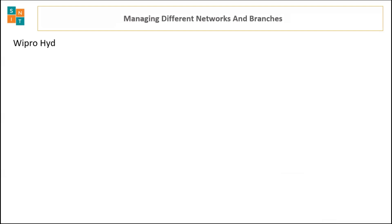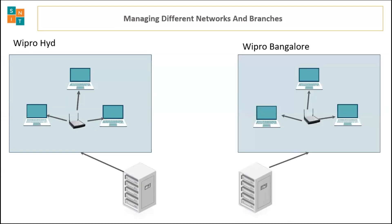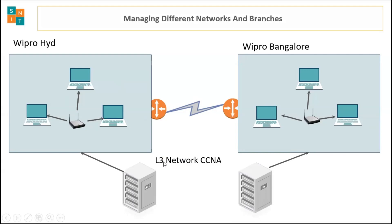Network administrators are responsible for designing, building, and operating the network inside the organization. For example, a branch of Wipro in Hyderabad would have its LAN network managed by a network engineer, and similarly the branch in Bangalore has its own local area network. The connectivity, establishment, and resource sharing between the Hyderabad and Bangalore branches are handled by these engineers, called L3 engineers, network engineers, or network administrators.